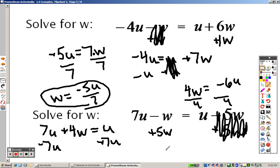So I would get W equals negative 6U over 4, which I can simplify that because I can take a 2 out of both of those, to get W equals negative 3U over 2.